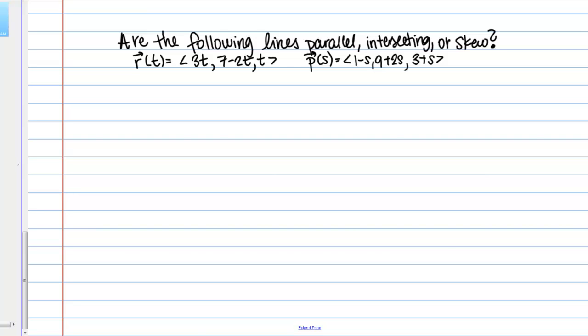In this video, we're going to determine if a pair of lines is parallel, intersecting, or skew. First of all, what is skew? That's kind of a preliminary piece of vocabulary. In 3-space, if there are a pair of lines that are neither parallel nor intersecting, we call them skew lines.